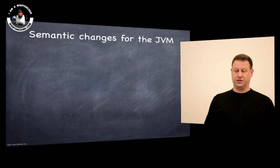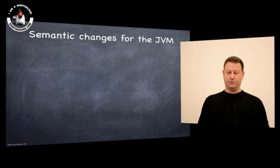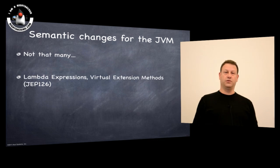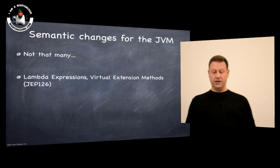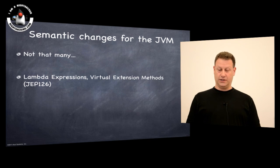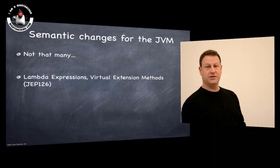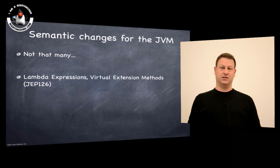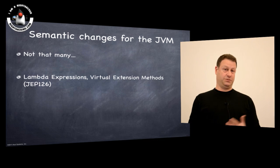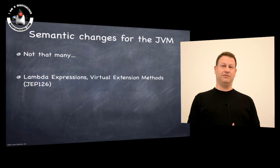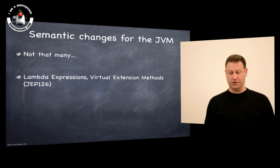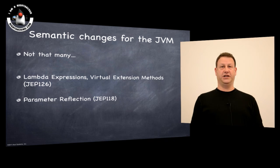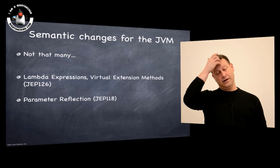So let's start with the semantic changes. What are the major semantic changes to the platform from a JVM point of view? There aren't really that many. Probably the biggest and most well-discussed one is the support for Lambda expressions. The support for Lambda expressions and virtual extension methods is a new capability that the JVM has to support. In addition to that major change, there are some other semantic changes.